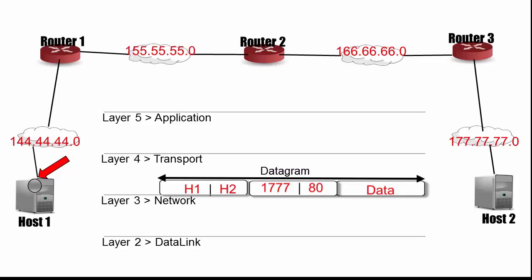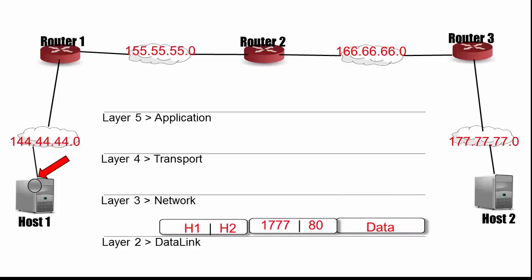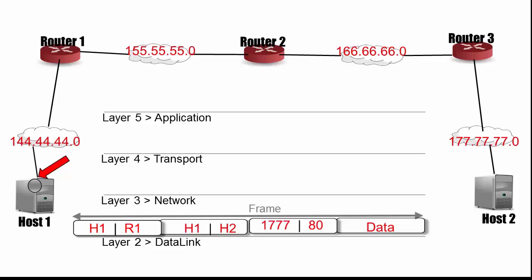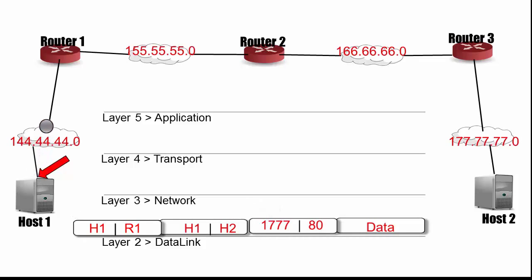That datagram is sent down to the data link layer. At the data link layer, a header is added to the datagram. This data link layer header has a hardware source address of host 1 and a hardware destination address of router 1. It's important to realize that the destination hardware address is not host 2. Note that the data link layer header, together with the datagram, is called a frame. This frame is converted to 1s and 0s and sent over to router 1 over physical cabling.